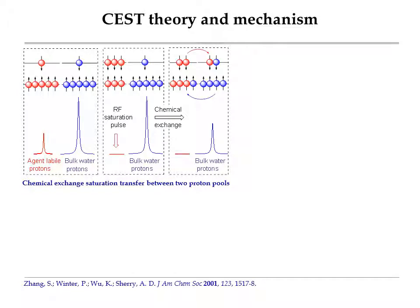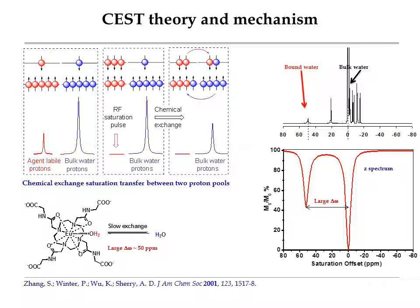If you saturate the labile proton pool with a frequency-selective pulse and then acquire the bulk-water signal intensity, when the proton exchange between two proton pools is slow, you will see a reduced bulk-water signal intensity due to chemical exchange. This is the CEST mechanism. The first example of a paramagnetic CEST agent was published 15 years ago on a molecule called europium-dotted glutamate. The water exchange rate in such agents is so slow that when you acquire a high-resolution MR spectrum of this molecule, you will see the bound-water peak at a chemical shift around 50 ppm.